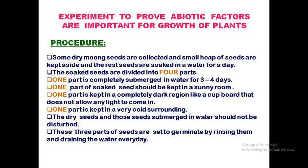The first part is completely submerged in water and kept for three to four days. In the second part, the soaked seeds are kept in a sunny room. In the third part, seeds are kept in a comparatively darker region — for example, a cupboard or any corner of a room where sunlight doesn't reach. The fourth part is kept in a cold surrounding, such as a refrigerator.